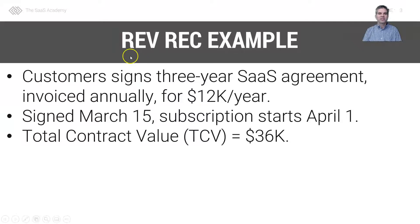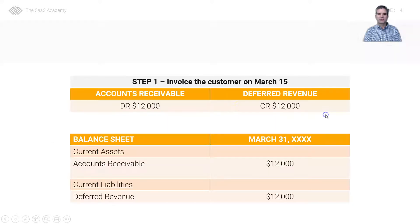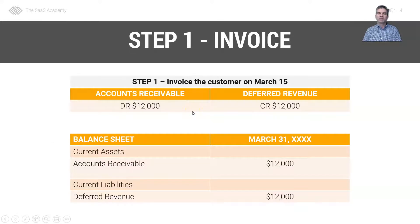So the setting: let's say a customer signs a three-year SAS agreement. We invoice annually for $12,000 a year. The customer signs on March 15th and the subscription starts April 1st, so we have a total contract value of $36,000, or $12,000 per year.